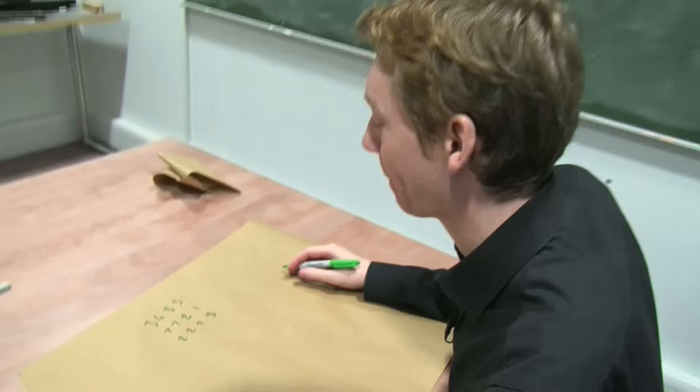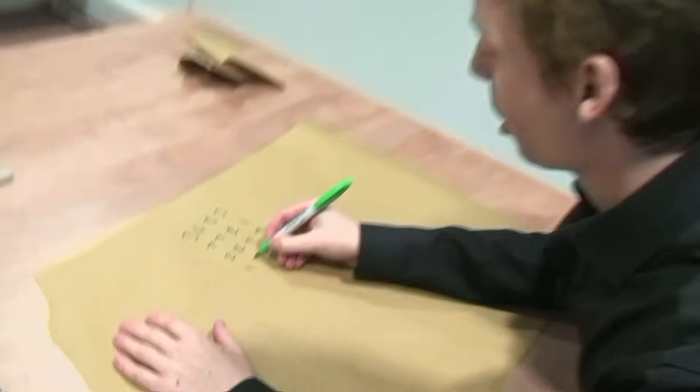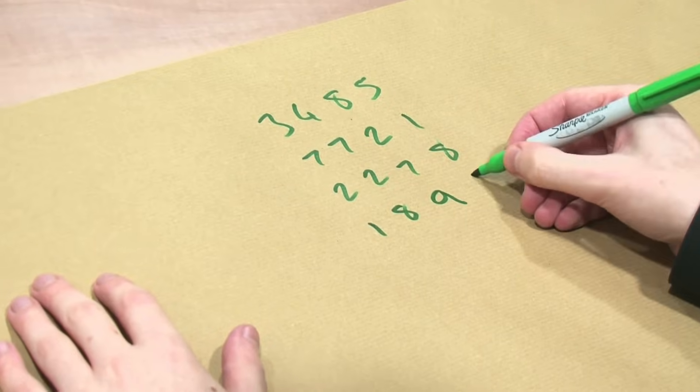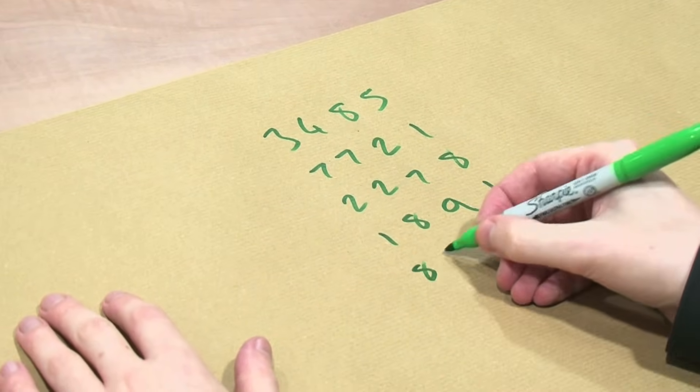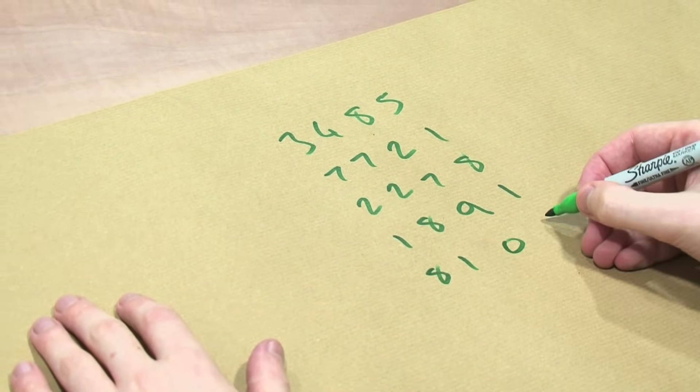Give me another. 1, 8, 9, 1. 1, 8, 9, 1. And I'll come up with another one, like 8, 1, 0, 8.